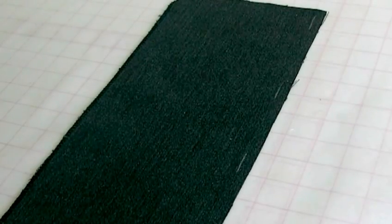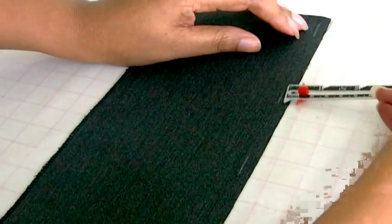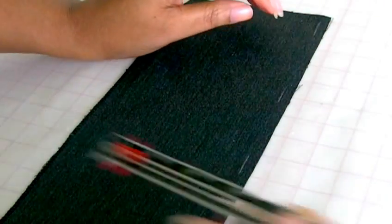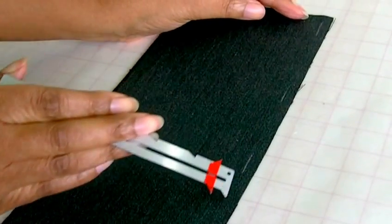To actually get that correct, what I've done here is chalked six millimeters all the way along, and then I'm going to line my bias binding raw edge along that line.